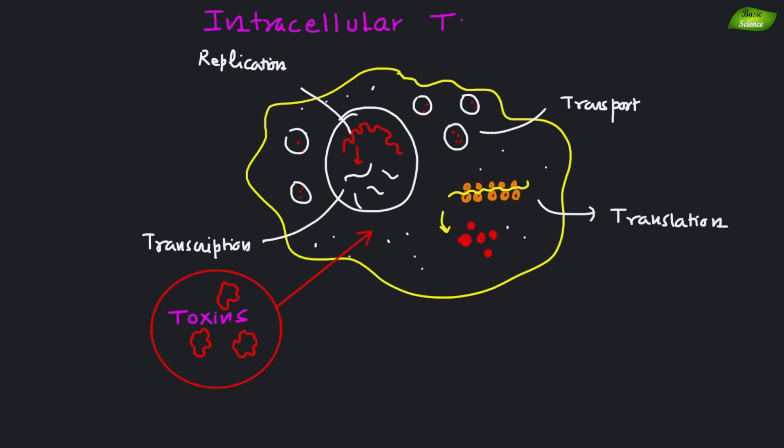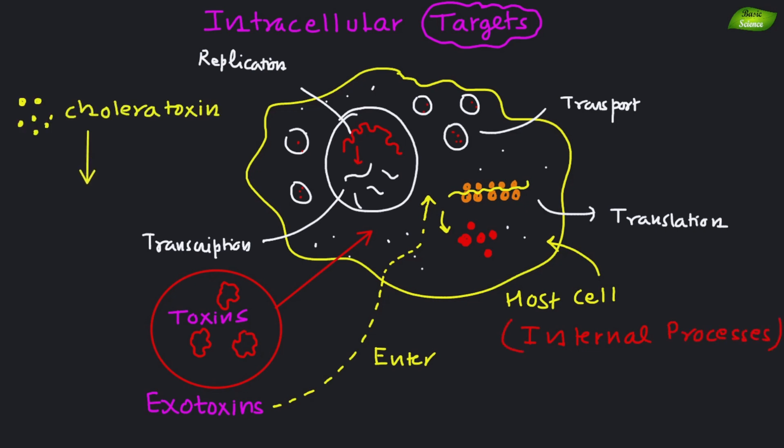The third mechanism is intracellular targets. Some exotoxins enter host cells and interfere with internal processes. The cholera toxin, for instance, modifies the host cell's G proteins, causing a massive influx of water and electrolytes into the intestinal lumen.